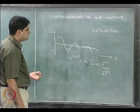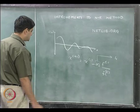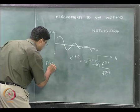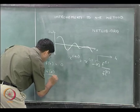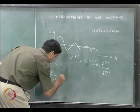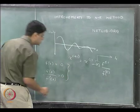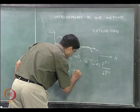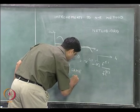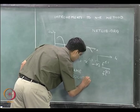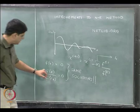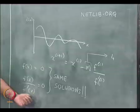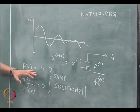That is one issue with this particular method. But what the same researchers realized is that the solution to f(x) = 0 and the solution to f(x) divided by f'(x) = 0 — these two functions have the same solutions. It can be numerically proved that f(x) / f'(x) has the same solution as f(x) = 0.